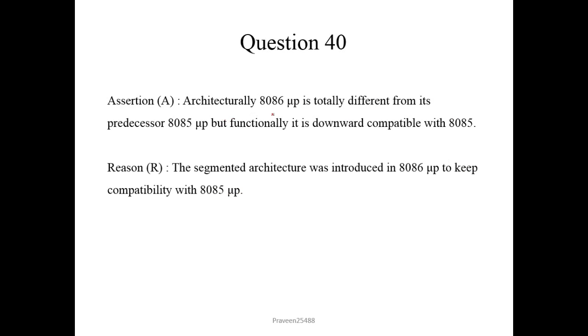Now question number 40. Architecturally 8086 microprocessor is totally different from its predecessor 8085 microprocessor. But functionally it is downward compatible with 8085. So this word is wrong here. It should be upward. If we compare 8085 with 8086, we will find that this is 8 bit microprocessor. Means 8 bit data can be processed. And in this 16 bit data can be processed. So this is 16 bit data. And there is 16 bit address line. And it has 20 bit address line. So we can say it can access 2 to the power 16 memory locations. It can address 2 to the power 20 memory locations, which is 1 megabyte, more than this 2 to the power 16, which is 64 kilobyte.